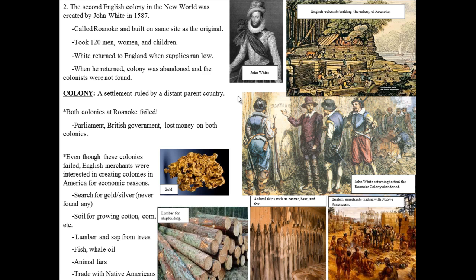Nobody knew where the colonists were. He returned to the colony and found written on a tree: 'Croatoan,' which is another island around Roanoke Island and also the name of local Native American groups. This is a very interesting story we're going to get into, so pay attention to Roanoke. Both colonies at Roanoke failed — the first failed and the survivors went home; the second failed and all the colonists were wiped out. Nobody knows what happened to them.